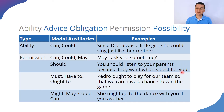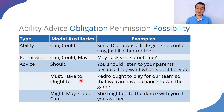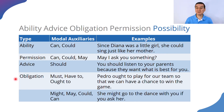Next, the example is: 'You should listen to your parents because they want what is best for you.' With 'should,' we are given a recommendation — advice. Yes, that's the answer. Next: 'Pedro ought to play for our team so that we can have a chance to win the game.' Pedro ought to play, Pedro must play, Pedro has to play — what is the implication? It is obligation.